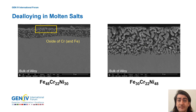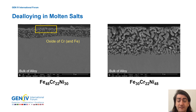A similar pattern is observed in ternary alloys. At lower nickel content, the dealloying propagates below an oxide layer of iron and chromium. So to some extent there is a balance, masking the underlying dependency of dealloying on nickel content. This type of dealloying is mediated by surface diffusion.